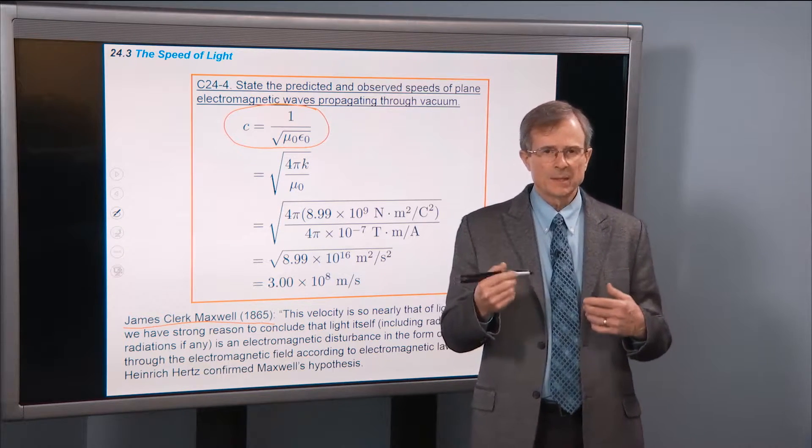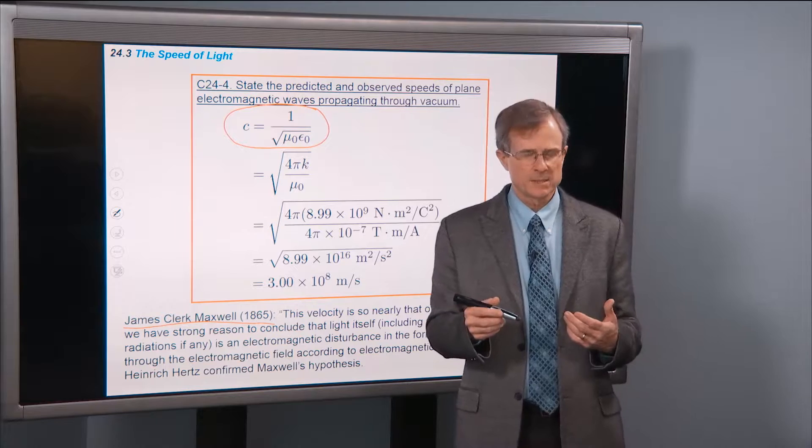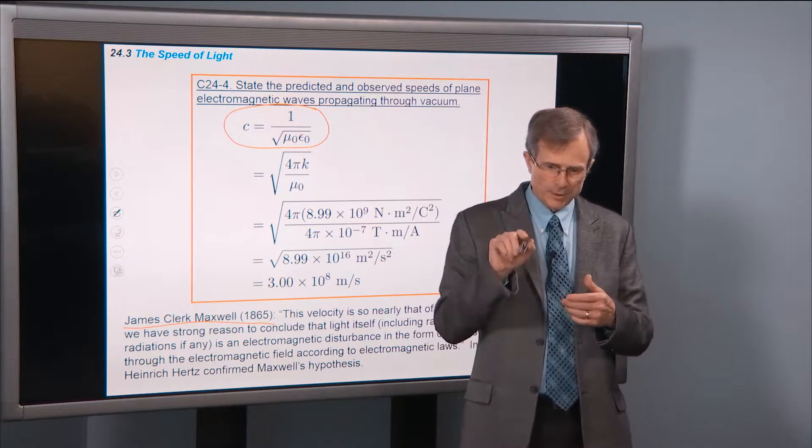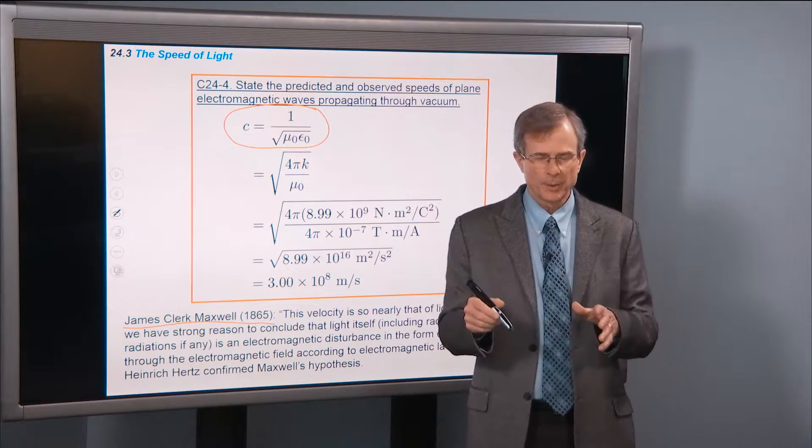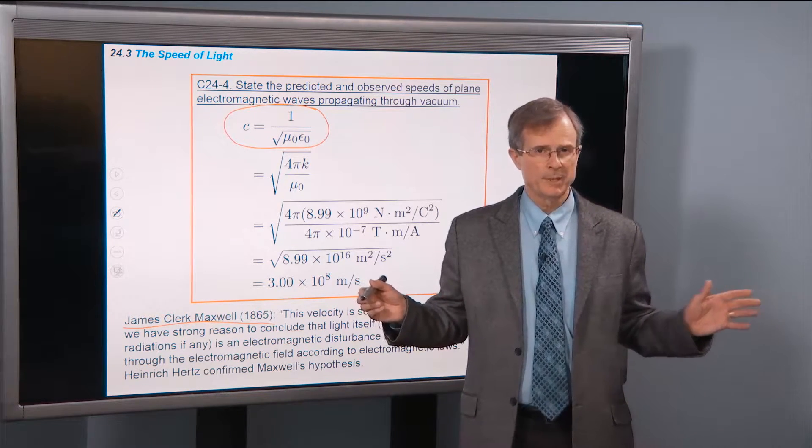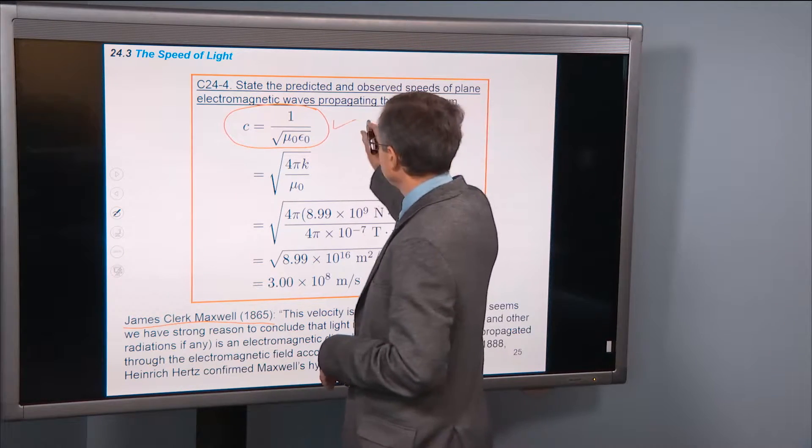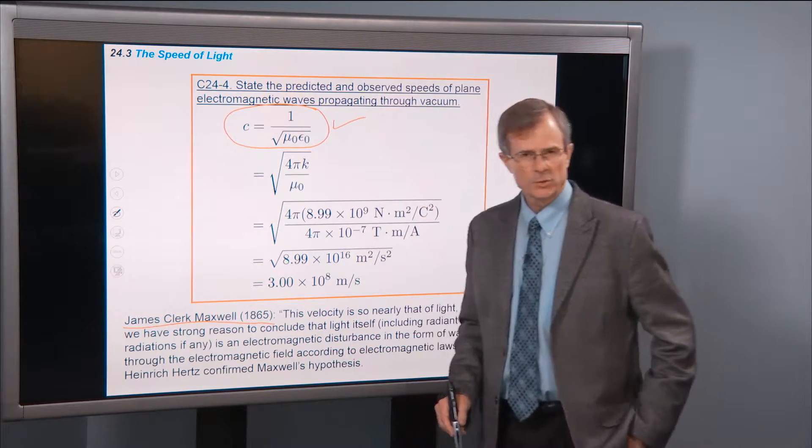He found that these equations of electromagnetism predict a wave with an electric field and a magnetic field in a direction of propagation that are all three perpendicular to each other. And he found this relationship for the speed of those waves.